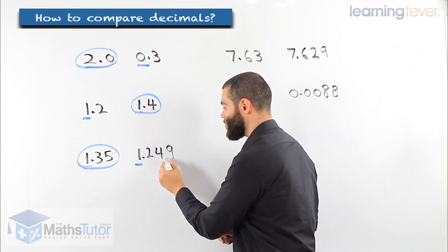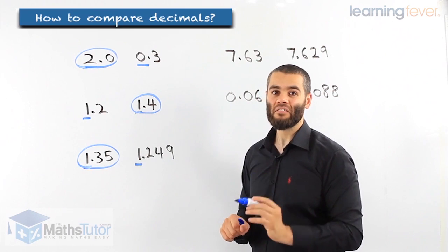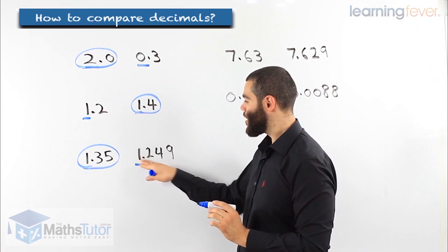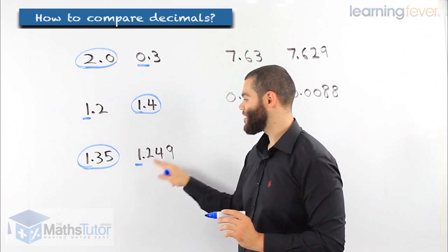Although this has several numbers, we always look at the place values. Don't get tricked. 1.249, 1.35. This is larger than that.